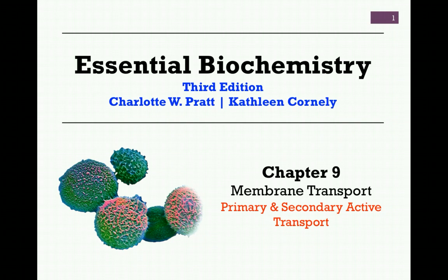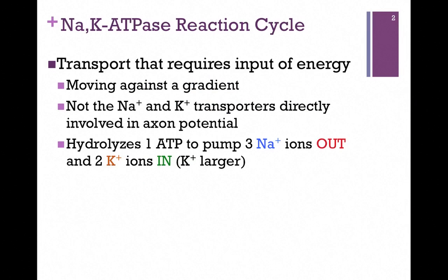We're continuing our studies in Chapter 9 on membrane transport, and our subject for this lesson is primary and secondary active transport — transport that requires the expenditure of energy. Recall in our previous lessons, we saw examples of facilitated or passive transport. In other words, we were moving things with a gradient. In some cases, those transporters were more selective than others, but it was always with a gradient, and therefore it did not require the input of energy.